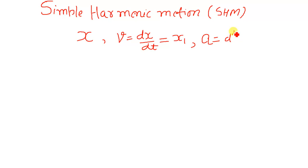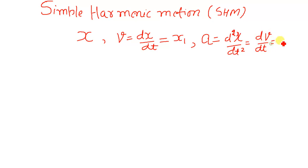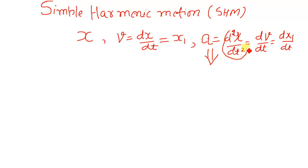You can also write acceleration as dv/dt, but since I am using the symbol x1, I can write it as dx1/dt. Since acceleration is the second derivative of x with respect to t, for acceleration I will be using the symbol x2.